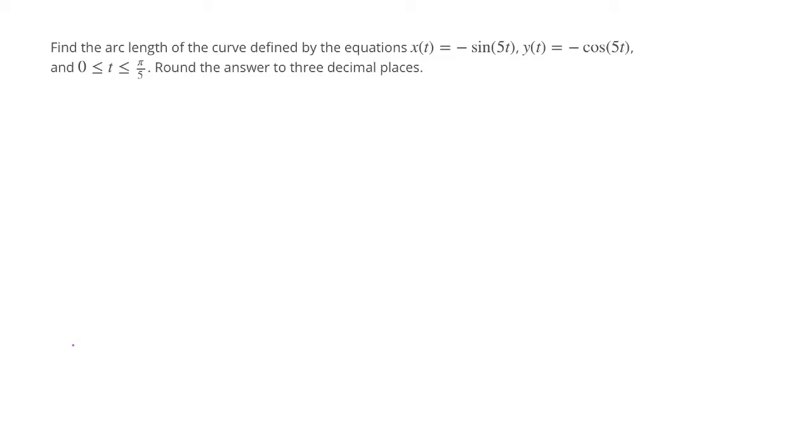Greetings, everybody. So what we're going to be asked to do in this problem is to find the arc length of the curve, where that curve is going to have a parametric form of x(t) = -sin(5t) and y(t) = -cos(5t). Now we want to find the length of this curve in the interval with t running from 0 to π/5.